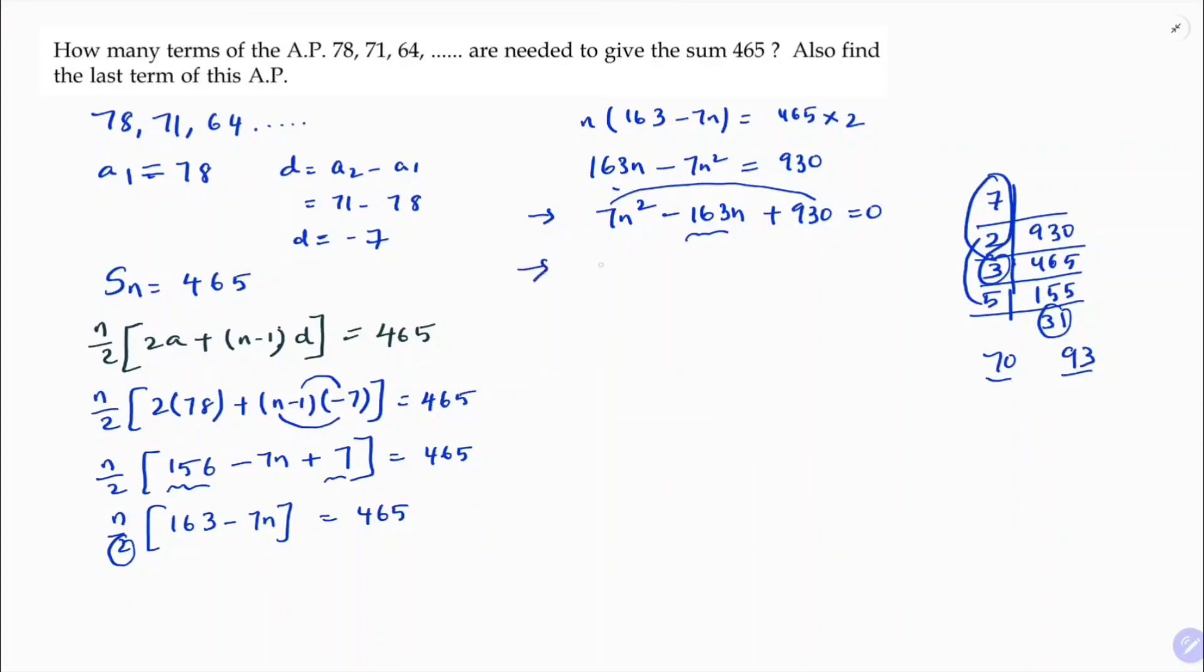So I got the factors here like 7n square minus 70n minus 93n plus 930 equals 0. So now here in these two terms, I can take 7n common, n minus 10, minus 93 if I will take common, n minus 10. Now n minus 10 again if I will take common, n minus 10 into 7n minus 93.